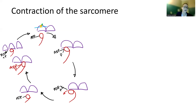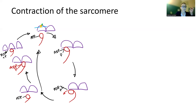As soon as acetylcholine goes away and you close the sodium channel, calcium gets reabsorbed back into the sarcoplasmic reticulum. When that happens, you're going to close off the myosin binding sites — so it doesn't matter how much energy you have, the myosin binding site is closed. The head of the myosin will still continue to bob up and down, but it can't attach and pull because the myosin binding site is not available anymore.